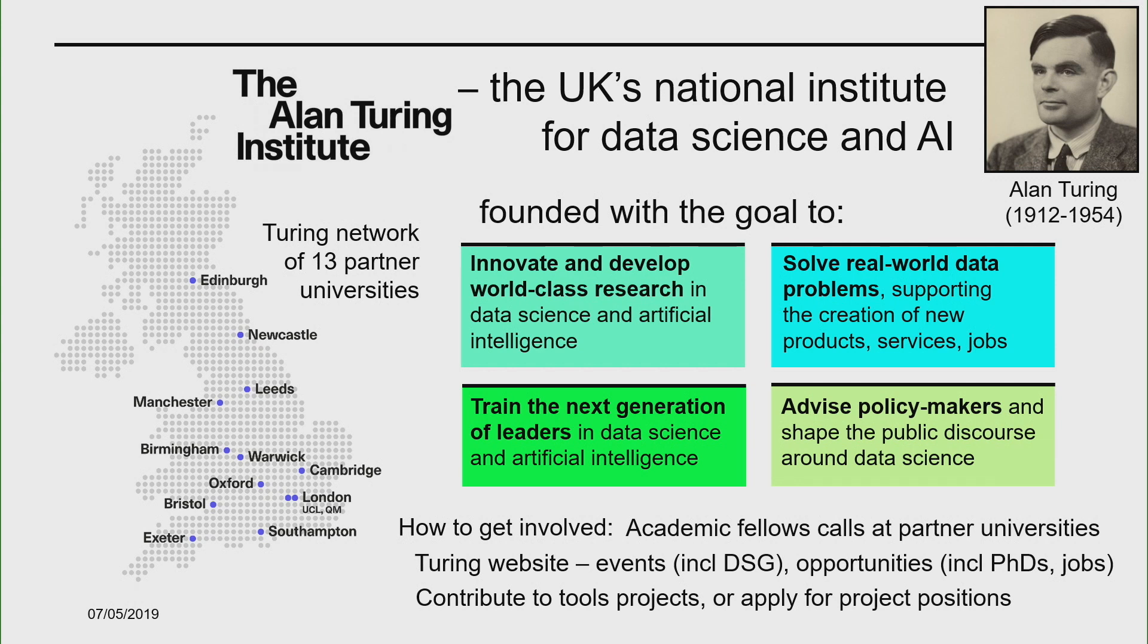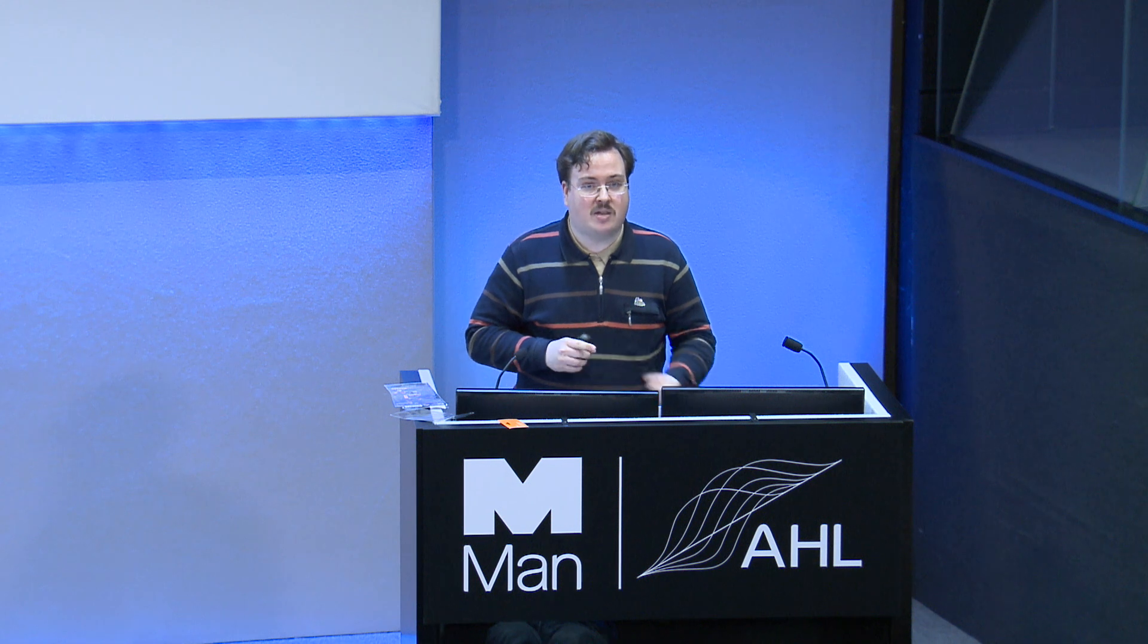If you are a member of one of the 13 partner universities, you can become a fellow by applying to one of the regular calls, but the institute also has its own staff. The fellows are fellows by secondment, but the institute is regularly hiring staff at all seniority levels. It has its own growing research engineering group and a cohort of PhD students, as well as research assistants at PhD and postdoc level. There are applications open which you can look at on the Turing website. There are events happening.